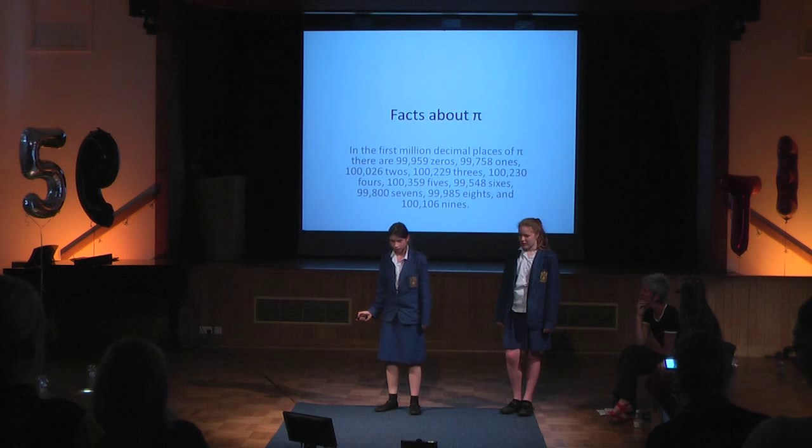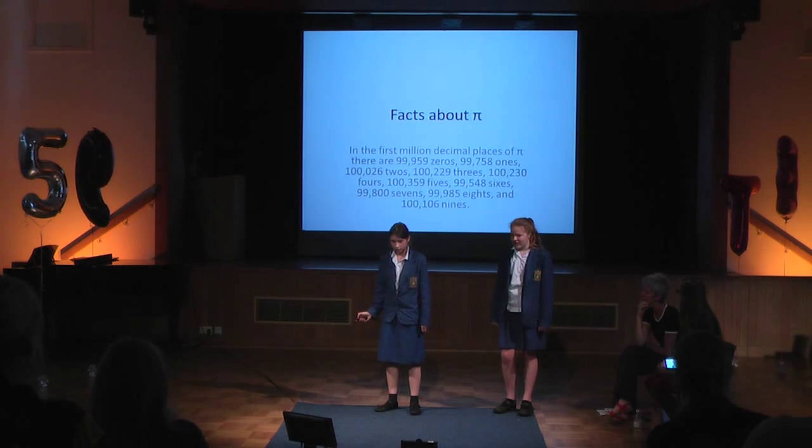In the first million decimal places of pi, there are 99,959 zeros, 99,758 ones, 100,026 twos, 100,229 threes, 100,230 fours, 100,359 fives, 99,548 sixes, 99,807 sevens, 99,985 eights, and 100,106 nines.